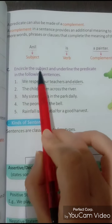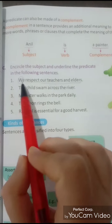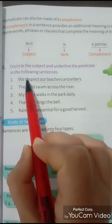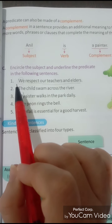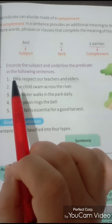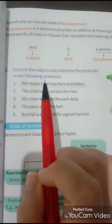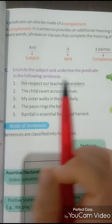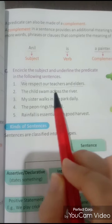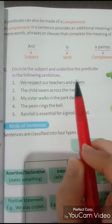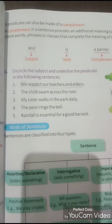In exercise C, what we have to do is encircle the subject and underline the predicate. The first sentence I have already solved for you so that you all can do the others. 'We respect our teachers and elders' — the subject is 'we' and 'respect our teachers and elders' is the predicate.